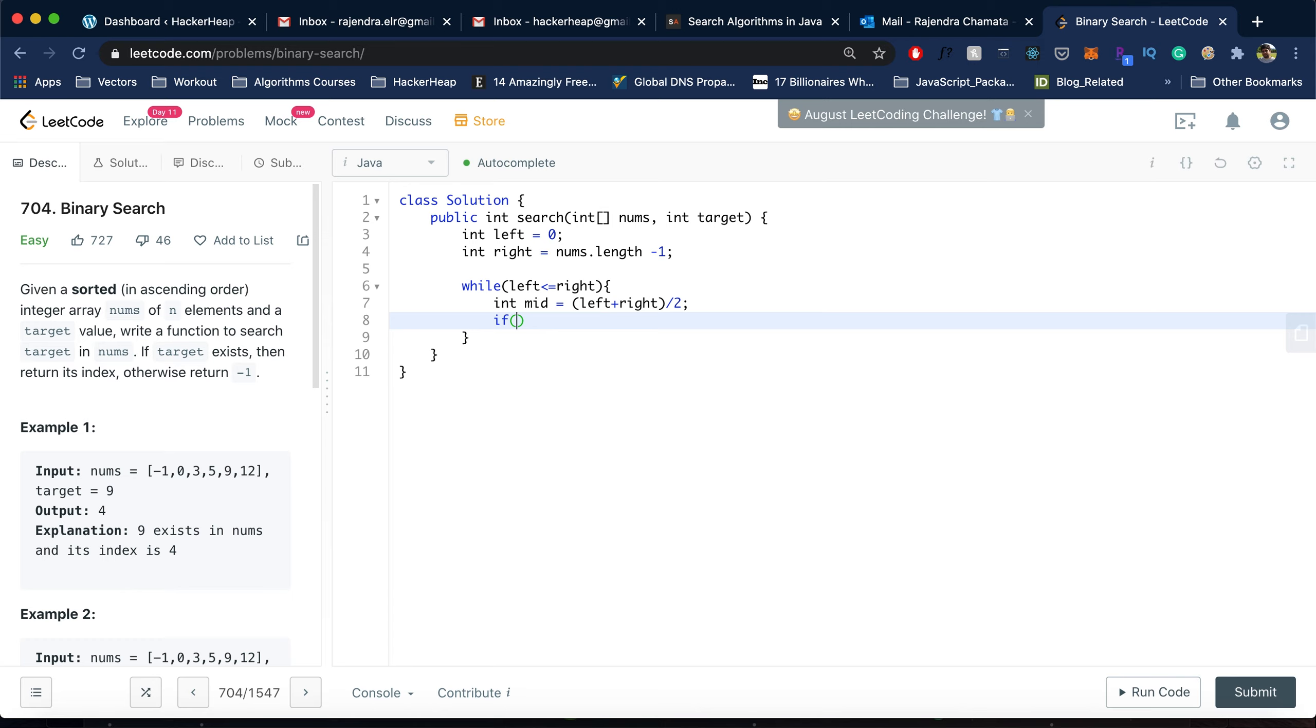We will check if nums[mid] equals target, we would just return mid. If nums[mid] less than the target,